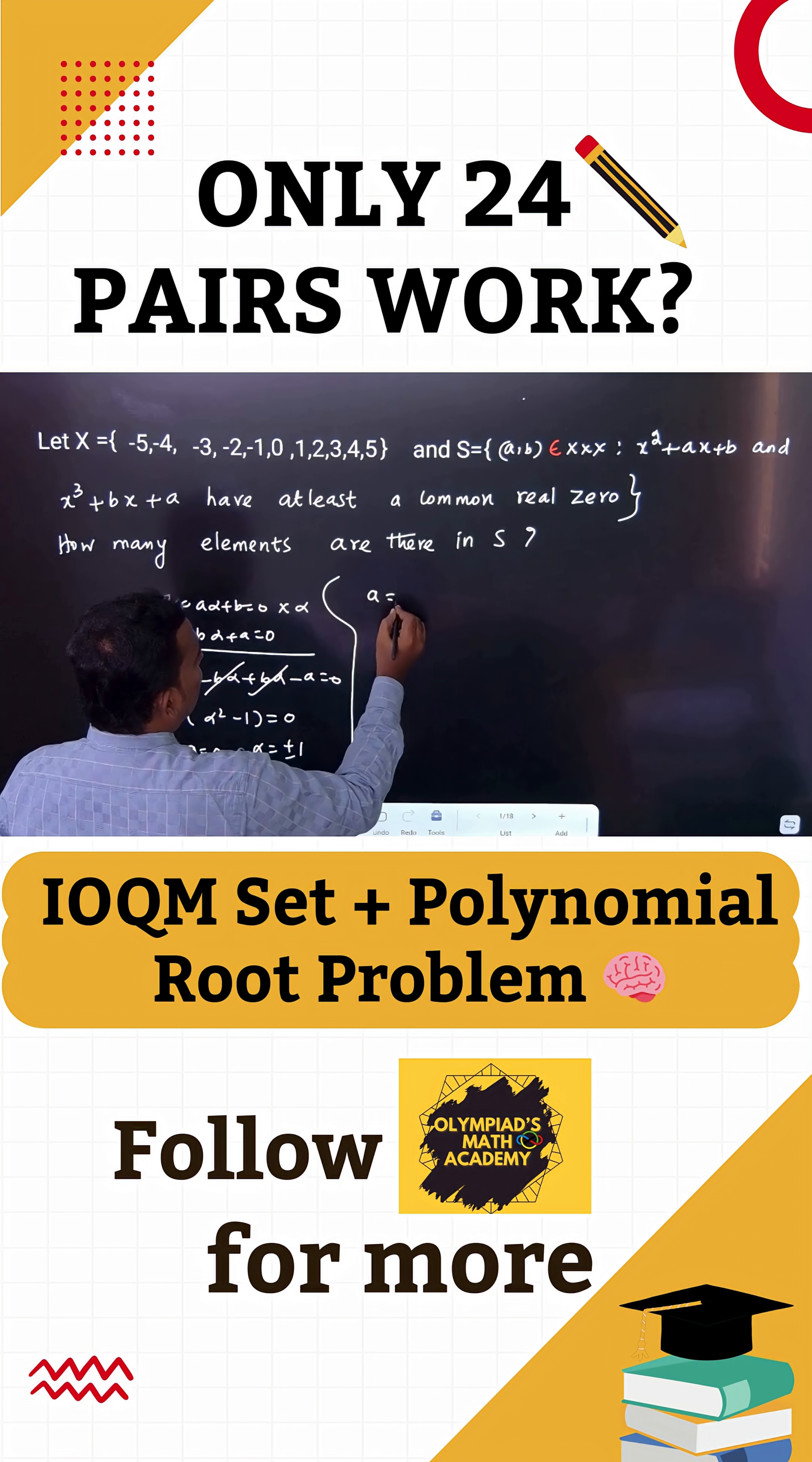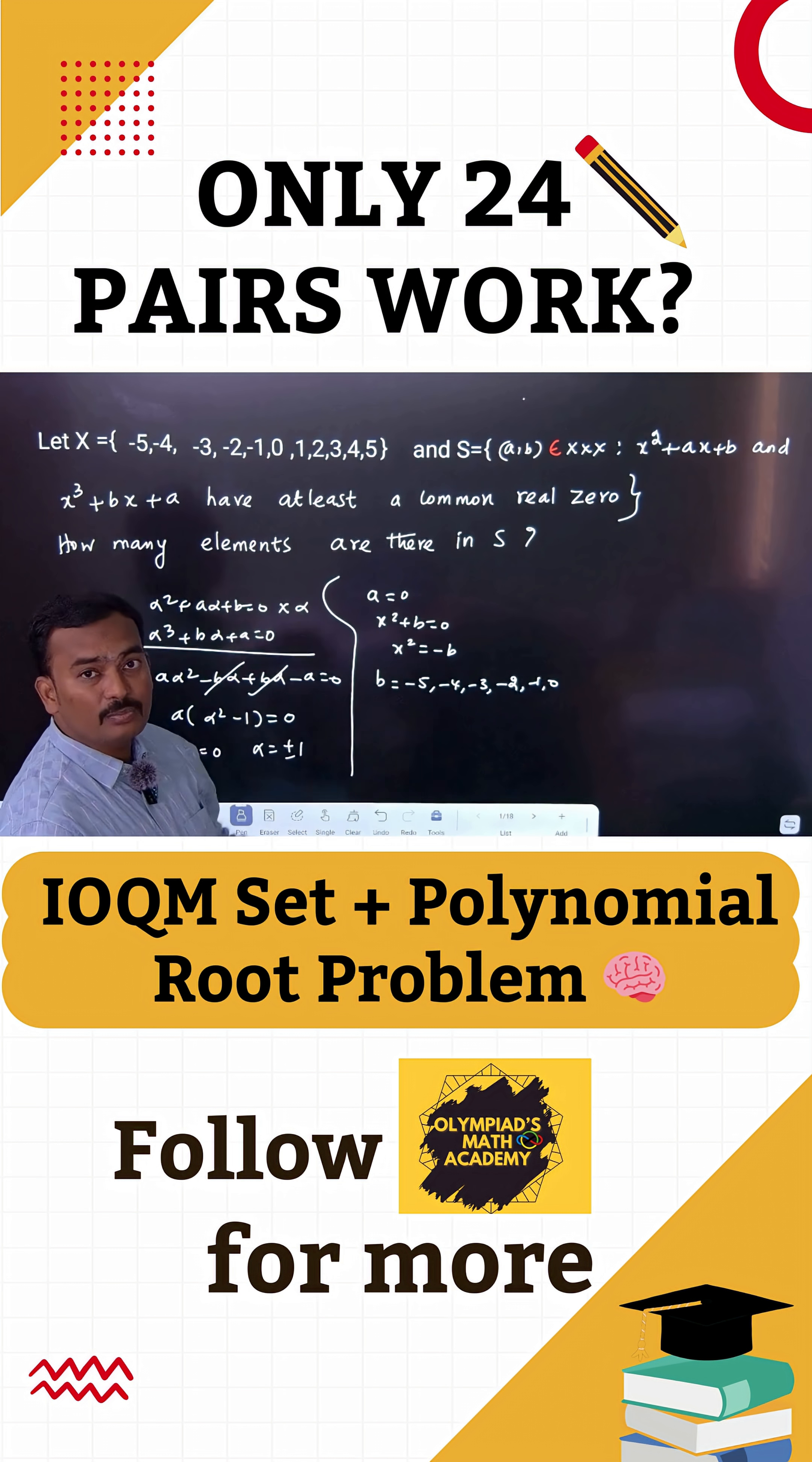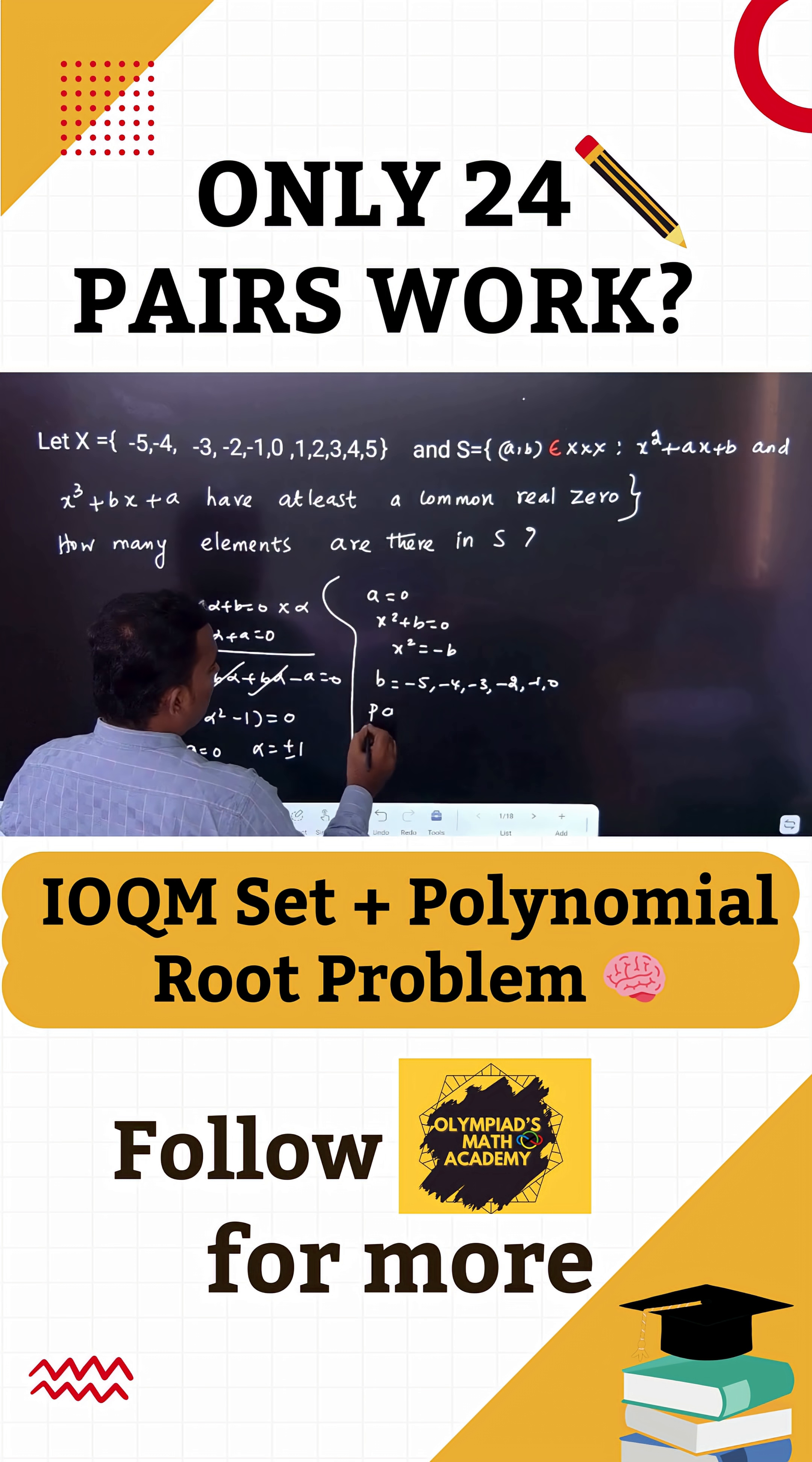Suppose A equals 0, then X squared plus B equals 0, so X squared equals minus B. What are the possible values of B? B should be -5, -4, -3, -2, -1, or 0 only, because minus into minus plus X squared is always positive. Therefore, when A equals 0, there are six possible pairs.